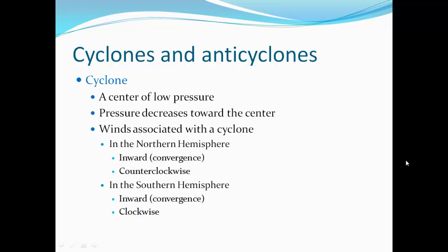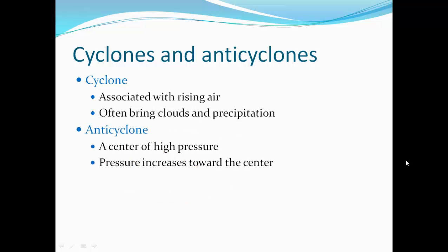Cyclones and anticyclones: a cyclone has a center of low pressure and the pressure decreases towards the center. The winds associated with a cyclone in the northern hemisphere come inwards, converge, and travel counterclockwise. In the southern hemisphere, the winds converge inward but travel clockwise. This is the Coriolis effect.